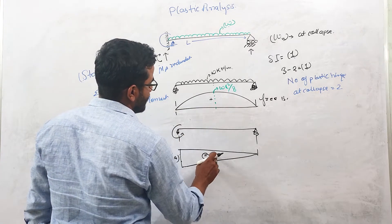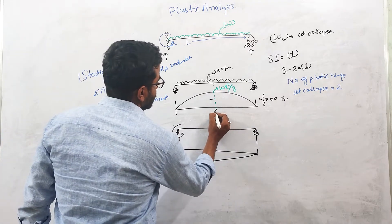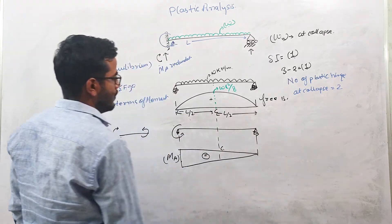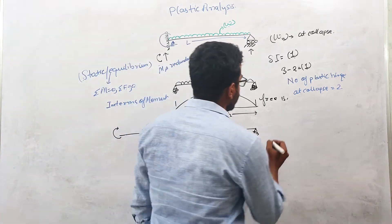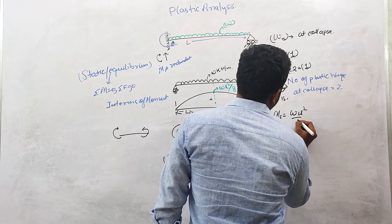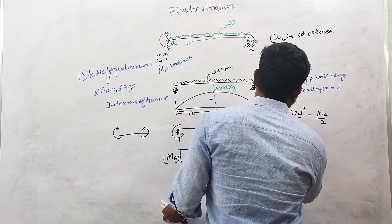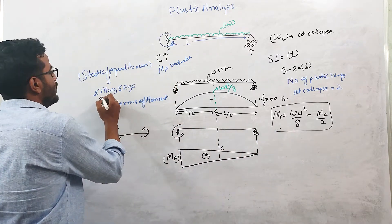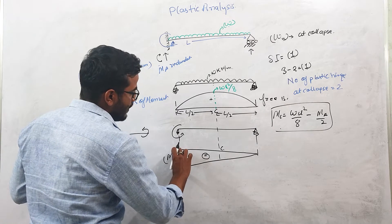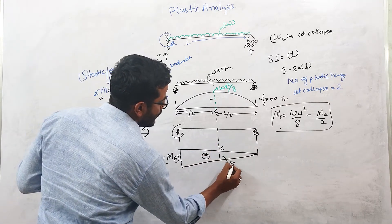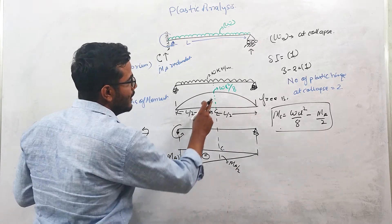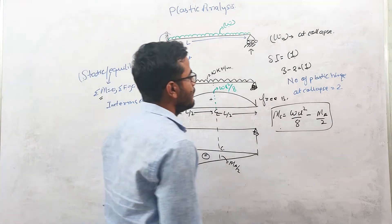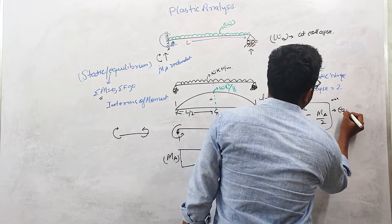This is the positive bending moment diagram. Writing the equilibrium equation at point C, which is at L/2 from both supports: the net moment at C is MC = wL²/8 minus MA/2. This is because at end A the moment is MA, and by linear interpolation at the center it will be MA/2. So net moment at C equals wL²/8 − MA/2. This is our equilibrium equation.